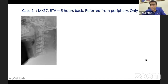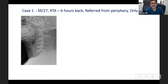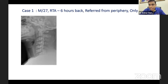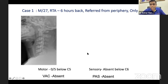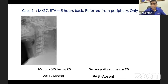The first priority is neurology. The patient is a complete ASIA A injury with power in the C5 area, sensations absent below C6, and absent voluntary anal contracture and perianal sensations. The next step would be to get a CT and an MRI done.